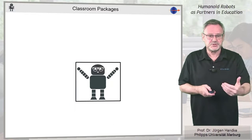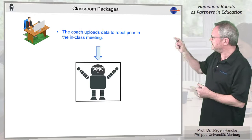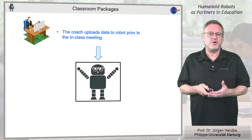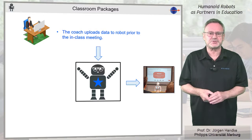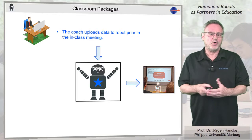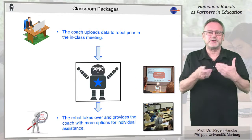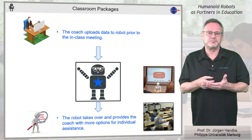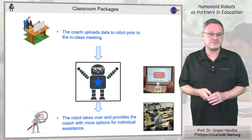The preparation of a classroom package is simple. Via a front-end, the coach loads the data onto the robot and activates the robot in class via sensors, spoken triggers, or via a mobile device. The robot will then act autonomously and carry out the predefined activities within the predefined time slots.